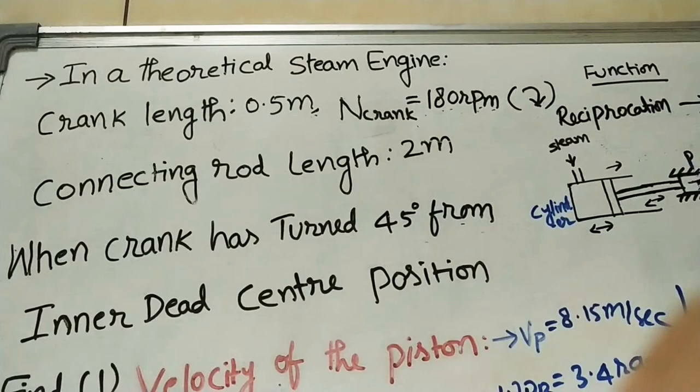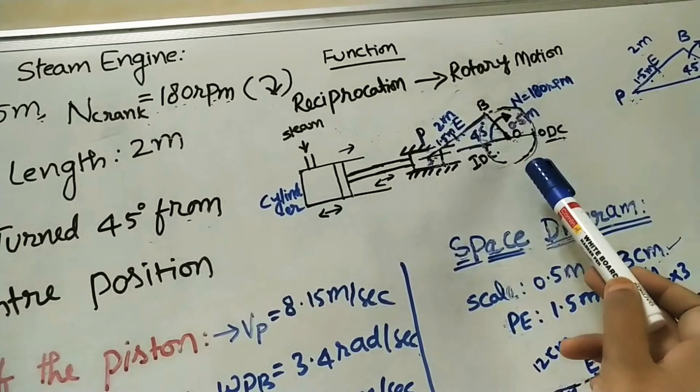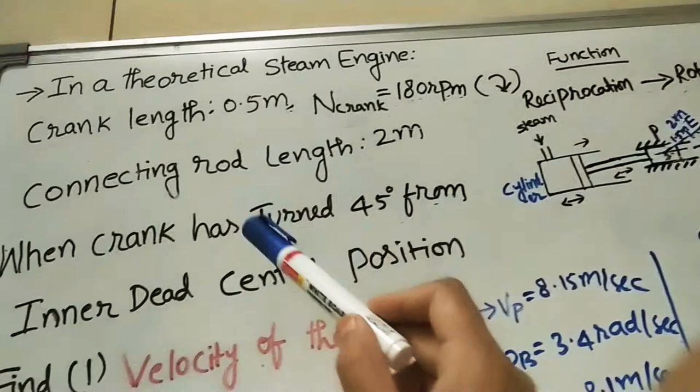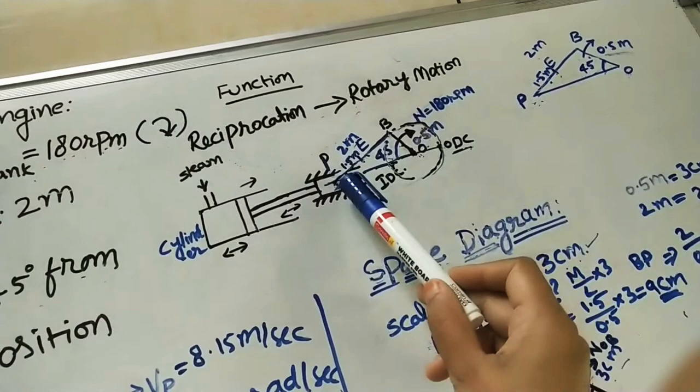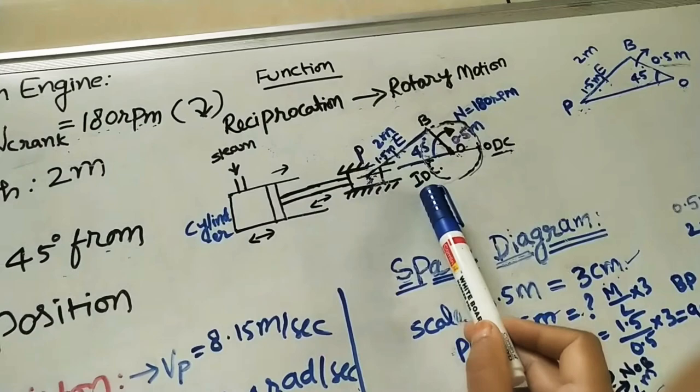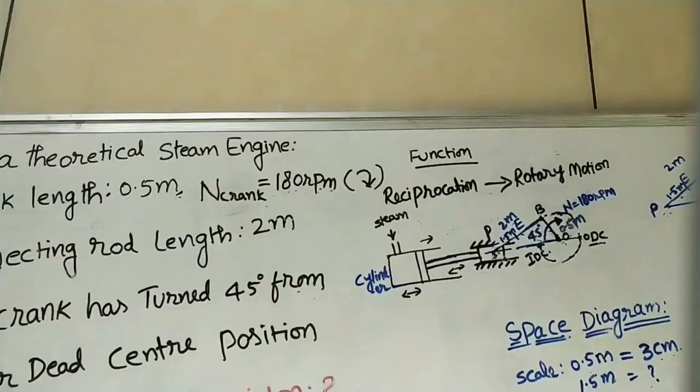For finding these velocities, we have to do the velocity diagram. In this question, the steam engine diagram is not given. Just for explaining, I took this steam engine diagram — it converts reciprocating motion into rotary motion. In the exam, whenever a steam engine problem comes, instead of doing the entire diagram, we do just this triangular part. It's not necessary to draw the full steam engine diagram.